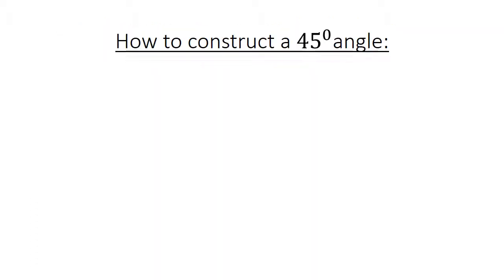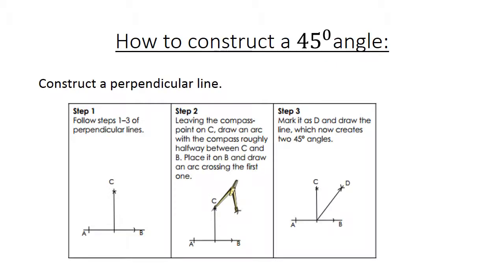How to construct a 45 degrees angle. We construct a perpendicular line, so we are going to follow step 1 to 3 for perpendicular lines. Step 2: Leaving the compass point on C, we draw an arc with the compass roughly halfway between C and B. Place it now on B and draw an arc crossing the first one. Mark it as D and draw the line, which now creates two 45 degree angles.